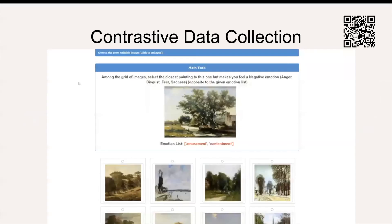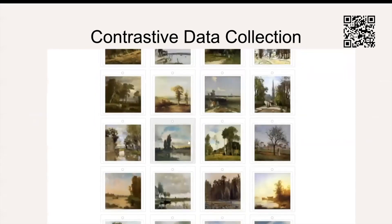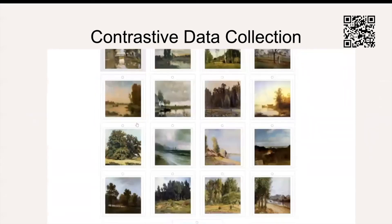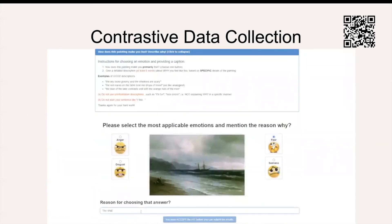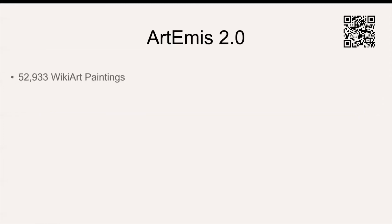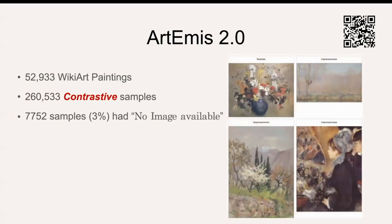To collect Artemis 2, we use the Amazon Mechanical Turk platform. Our interface shows a worker a query painting with dominantly positive or negative emotions, along with 24 visually similar paintings. We then ask the annotator to select one of the 24 paintings that evoke emotions opposite to the given list. To avoid forced annotation, we provide the worker with a no-image option. Finally, we ask the annotator to select a fine-grained emotion and explain in text why they felt that way. We collected annotations for around 53,000 paintings.